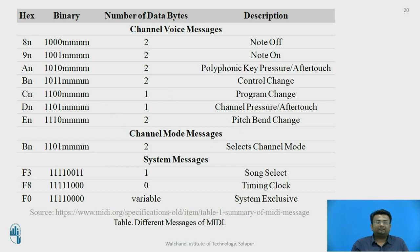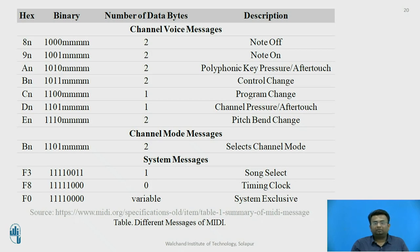Here are some examples of MIDI messages: note off message, note on message, polyphonic key press or after-touch message, control message, program change, pitch bend change, and channel mode message — in which the channel is selected using the select channel mode — song select, timing clock, and system exclusive message. M stands for 0 or 1, where N has a maximum value of F because it is hexadecimal.